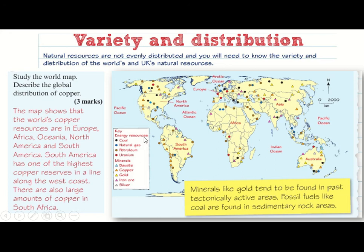If asked why certain minerals are found where they are, many minerals like gold tend to be found in tectonically active areas that bring minerals up from deep below the surface. Fossil fuels are often found in sedimentary rock because they are made from the build-up of sediments — coal is essentially fossilised remains of forests packed over time by layers and layers of rock. This links to geology covered in topic one of paper one.